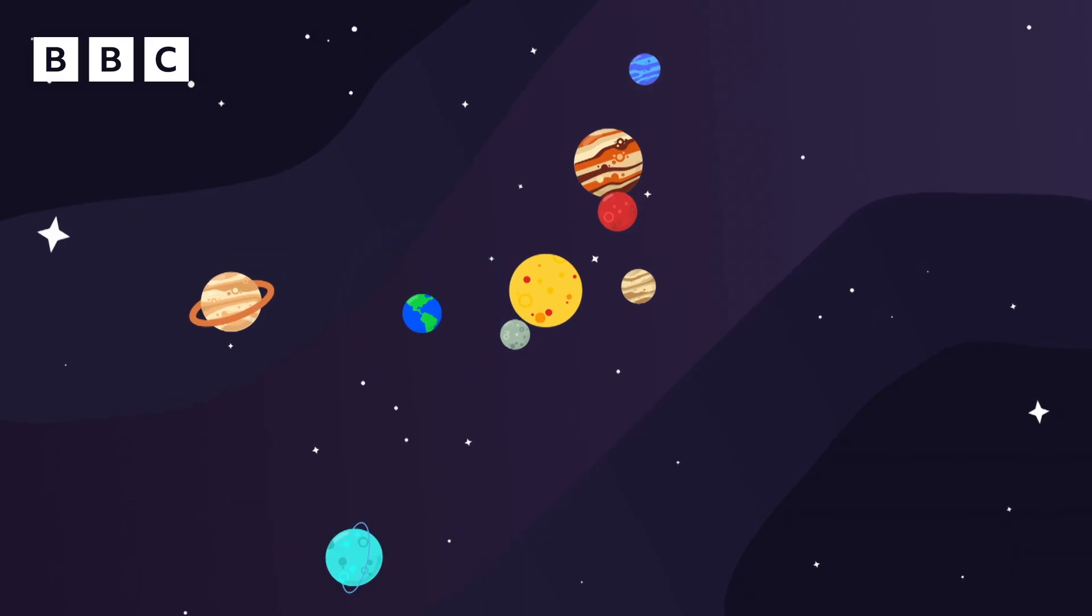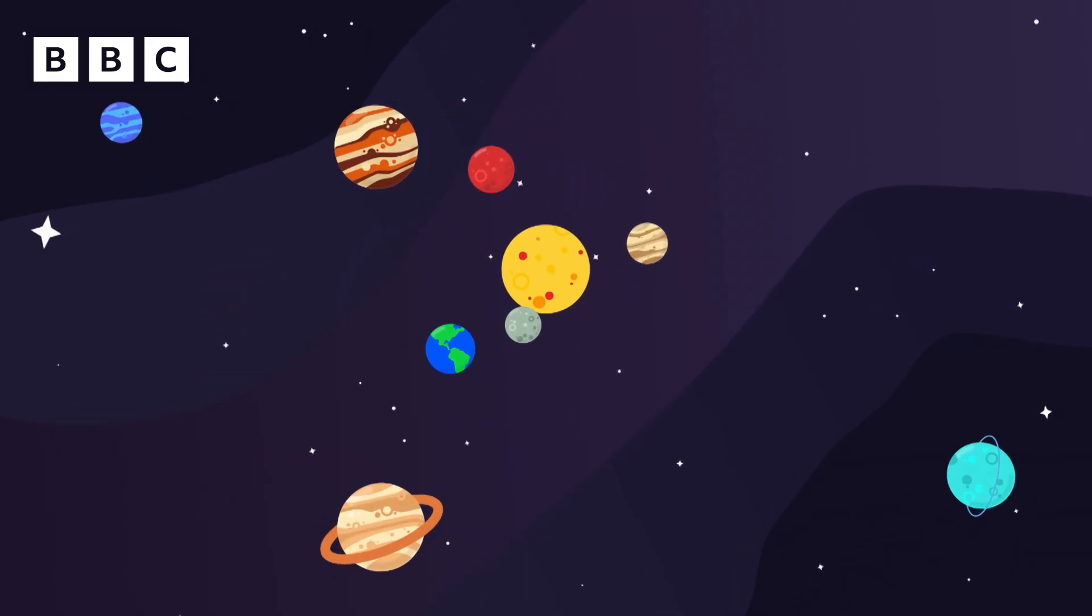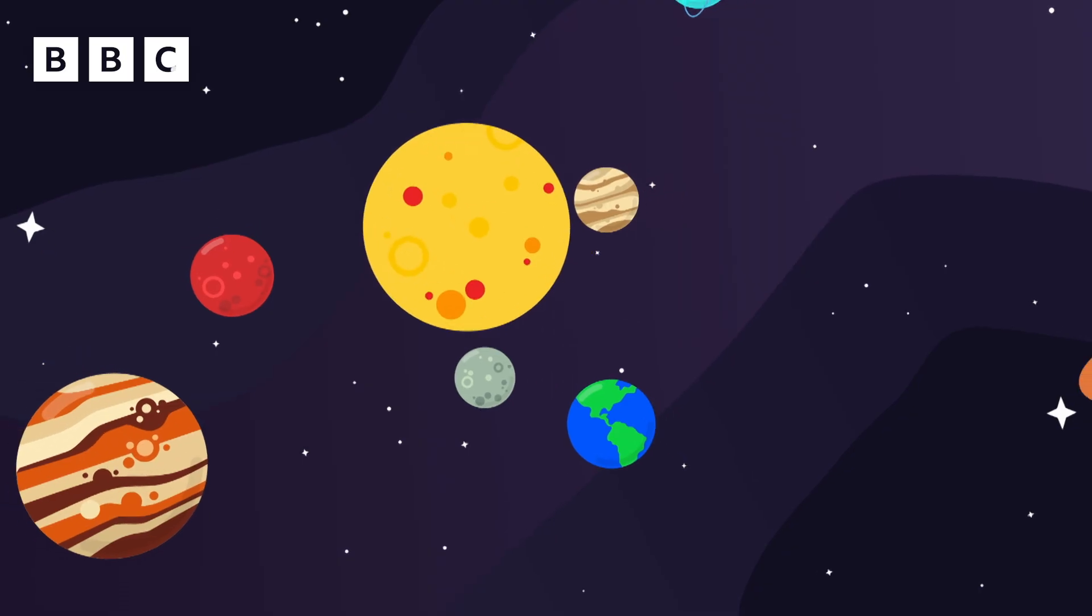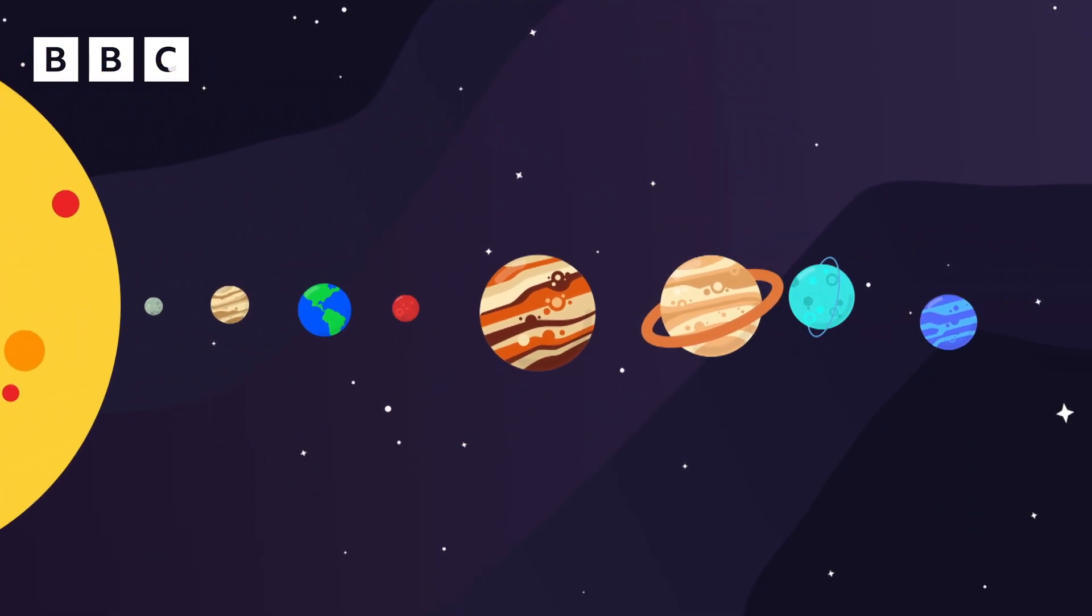Did you know that the Earth is part of a special family? It's called the solar system and this family is made up of eight very different planets.